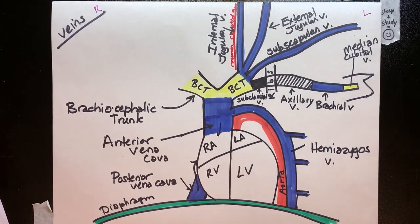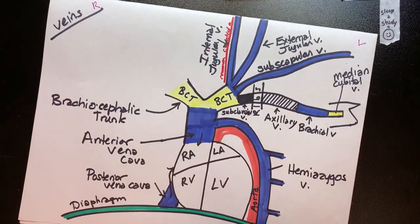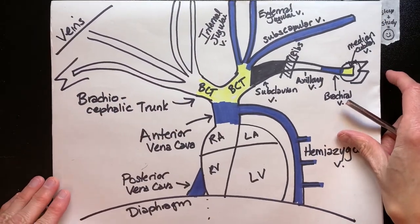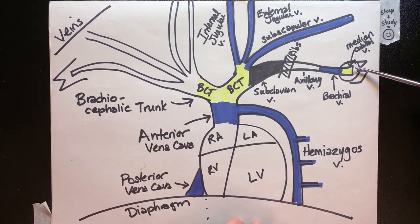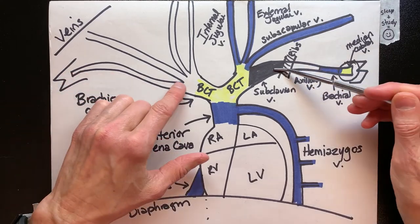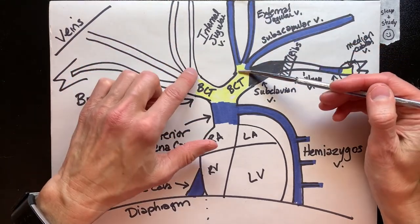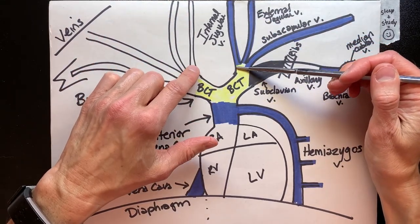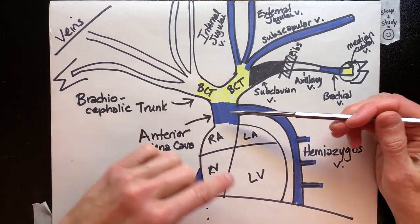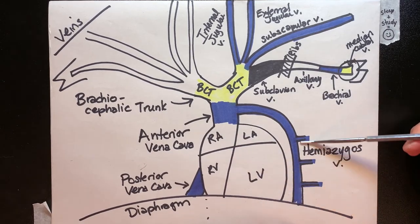That's the venous system. Looking at all the veins drawn out on both left and right sides: we can see the median cubital to orient ourselves, then coming in the same way on both sides. The subscapular, external jugular, and internal jugular veins all arrive at their respective brachiocephalic trunks — left or right — then enter into the anterior vena cava and into the right atrium. And there's our hemiazygos and our posterior vena cava.